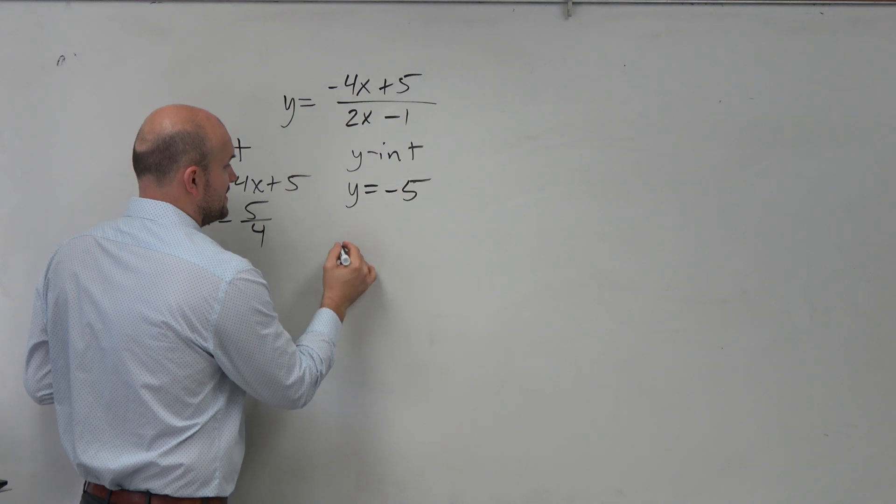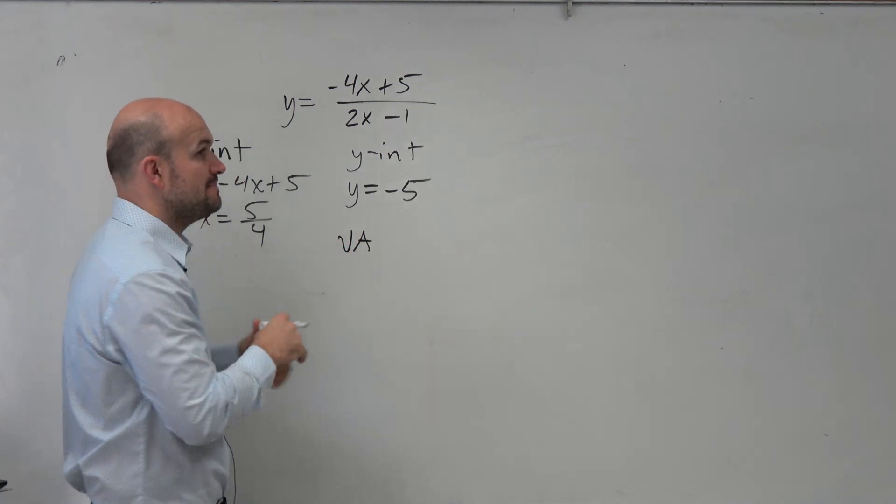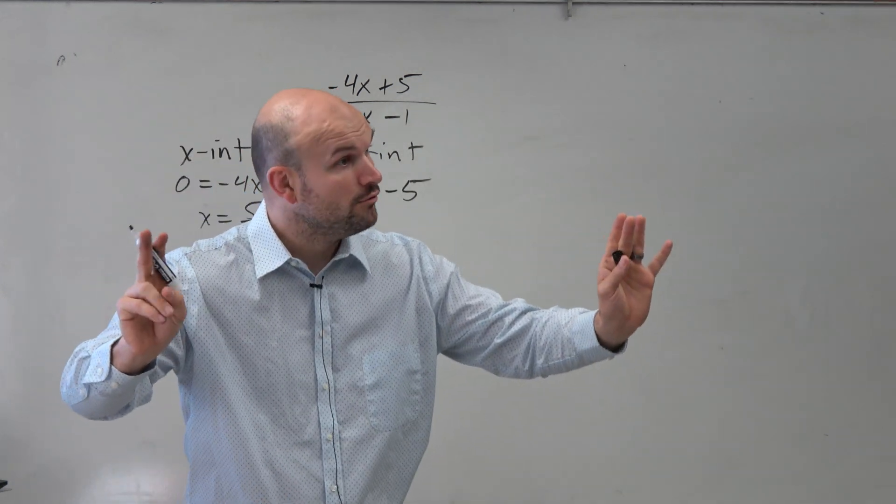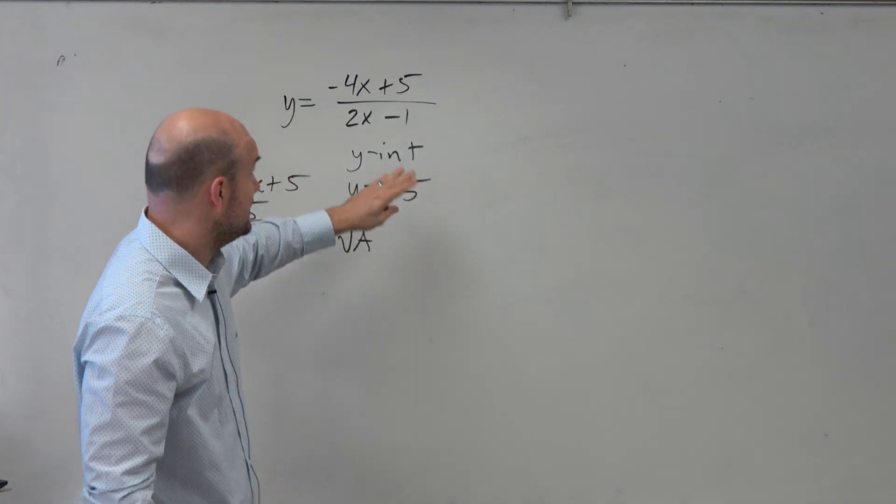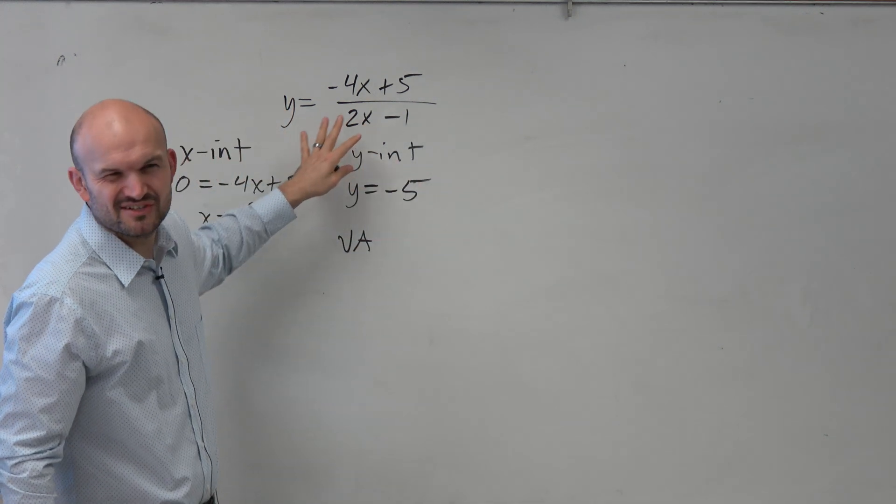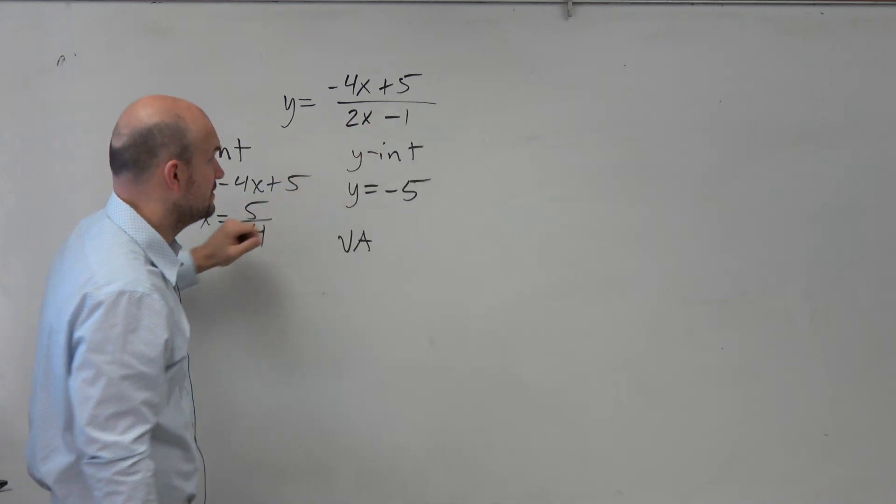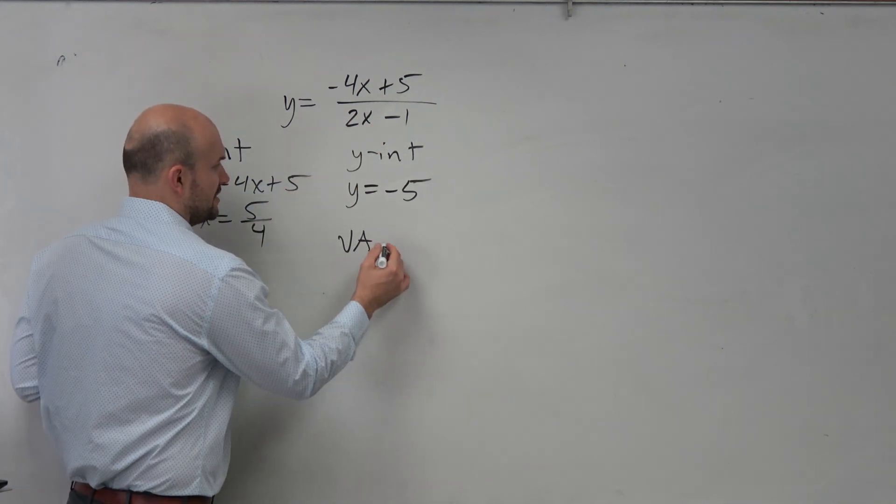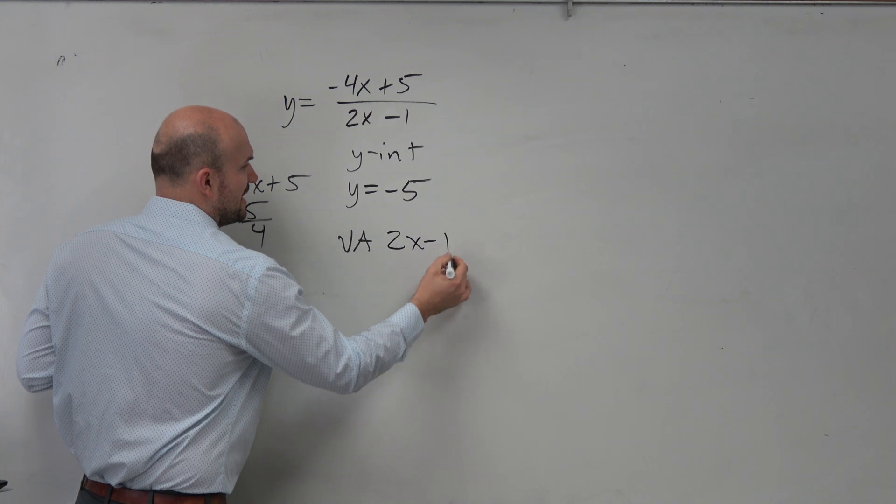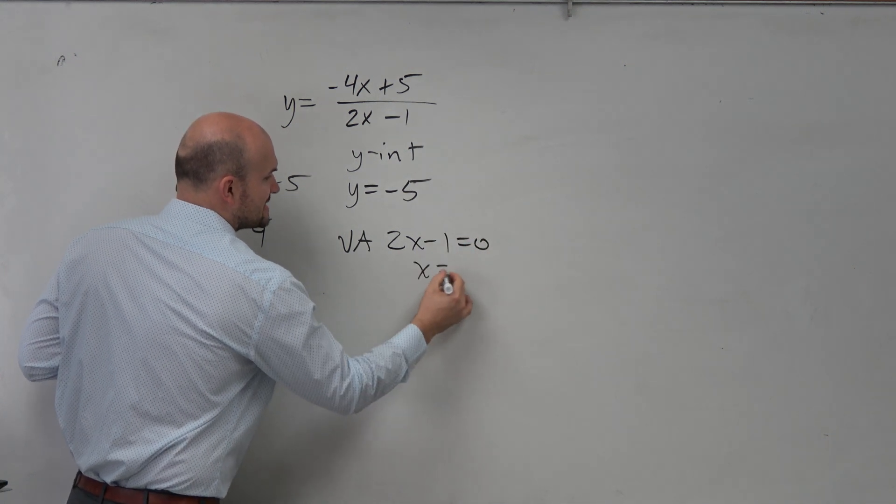For the vertical asymptotes, what values make the denominator equal to 0? We want to make sure it's not going to be divided out. I look at this and there's nothing you can factor to be divided out. Therefore, 2x minus 1 equals 0, and x equals 1/2.